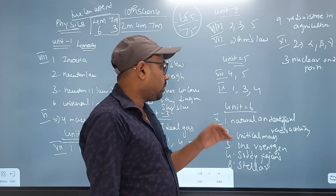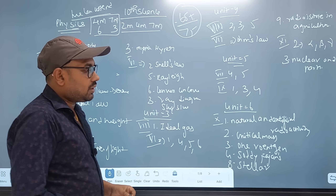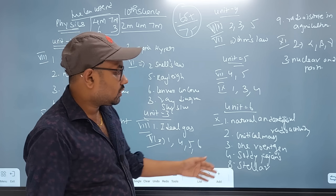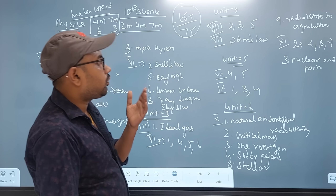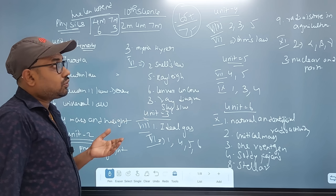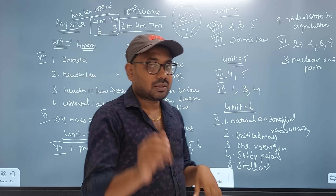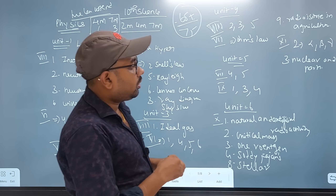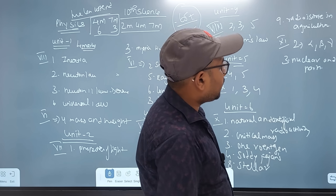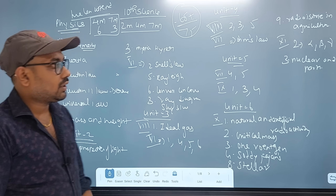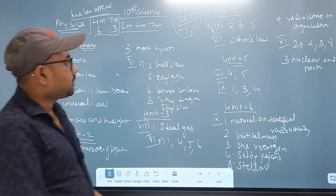In Unit 6, Rome number 10: Natural and Artificial Radioactivity, Critical Mass, Significance, and Stellar Energy — 2 marks A and B are important. 9th question: Radio Isotopes and Agricultural Uses — 4th question. Rome number 9, 2nd one: Alpha, Beta, Gamma and Nuclear Reactor — 3rd one. So, here is the physics summary.